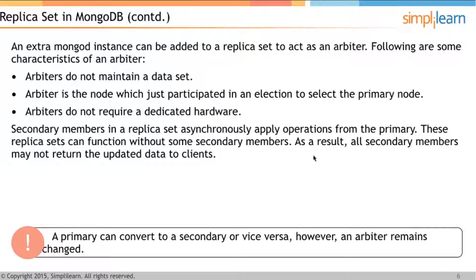Replica sets can function without some secondary members, meaning all secondaries may not always return updated data to clients. When you write to the primary, you may not immediately see the data in the secondary — it will appear after some time because it is a lazy write.